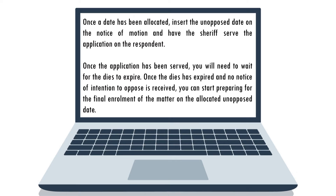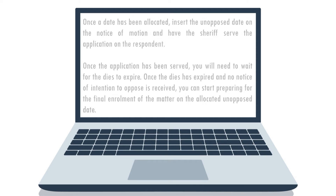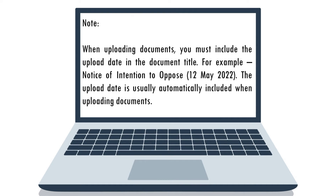Take note that we will not be looking at interlocutory or opposed summary judgment applications in this episode. Once the application has been served, you'll need to wait for the dies to expire. Once the dies has expired and no notice of intention to oppose is received, you can start preparing for the final enrollment of the matter on the allocated unopposed date. Take note that if you receive a notice of intention to oppose but no answering affidavit, you may proceed on an unopposed basis. Also note that when uploading documents, you must include the upload date in the document title.